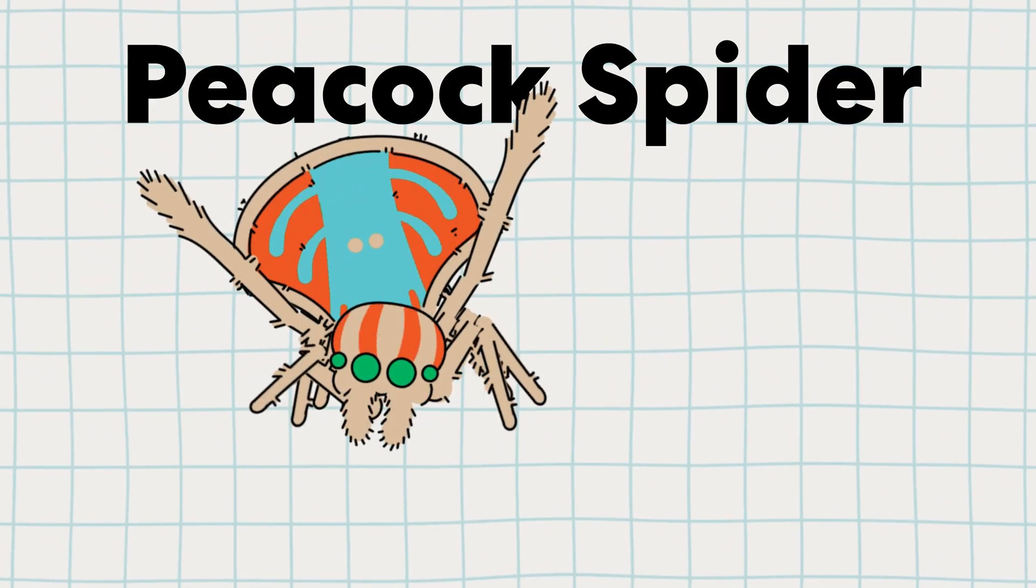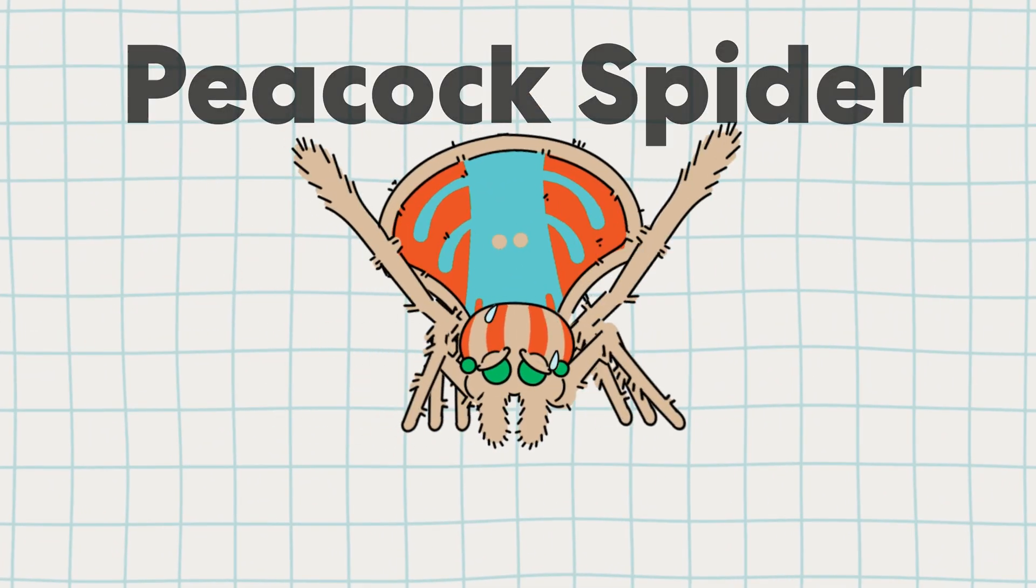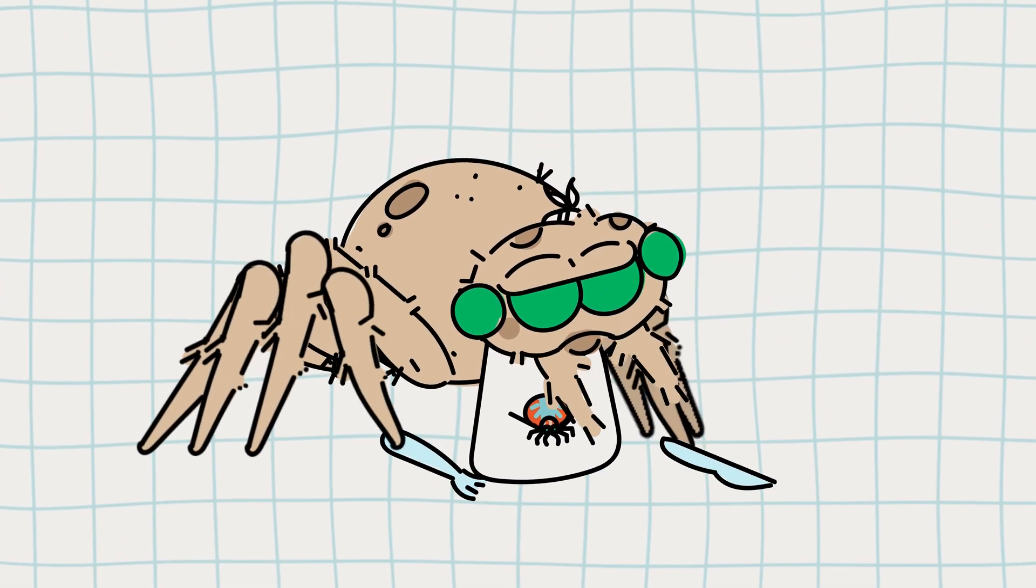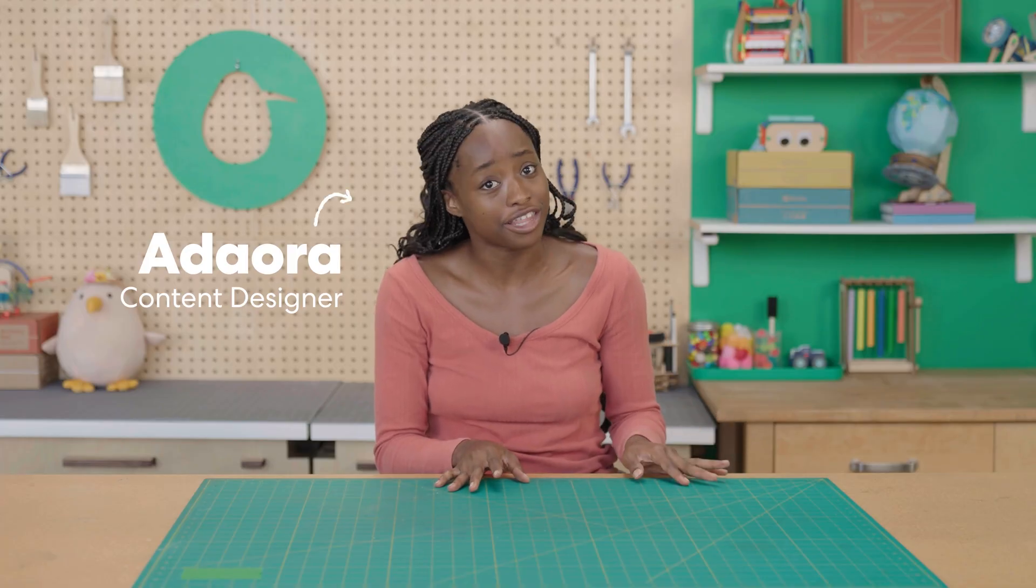The male peacock spider is dancing for his life. Literally. If his dance isn't perfect, the female might eat him. Yeah, in nature, a bad dance move could literally cost you your life. Therefore, you better know what you're doing.